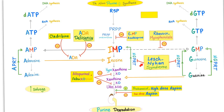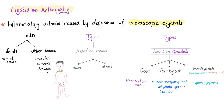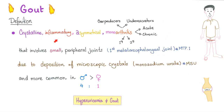Lesch-Nyhan syndrome is a problem in the salvage system — we talked about this in the last video. If you cannot salvage purines, there's only one way for them to go: into the urine as uric acid. Crystalline arthropathy includes gout, which is an inflammatory arthritis.